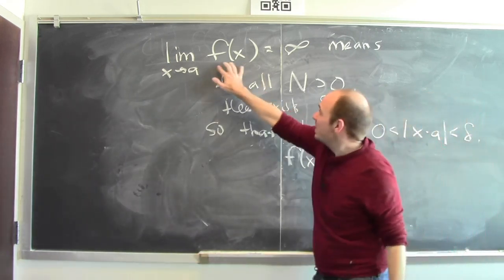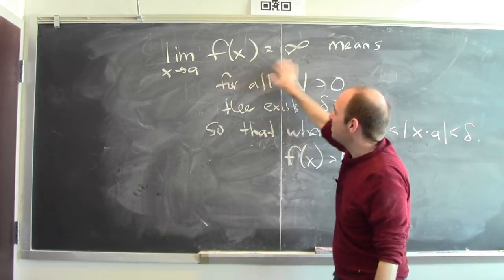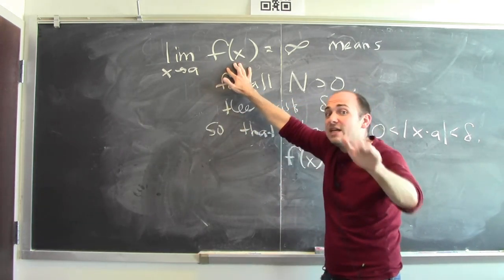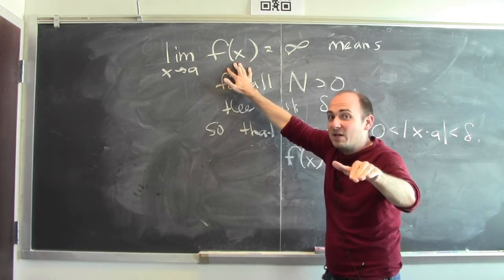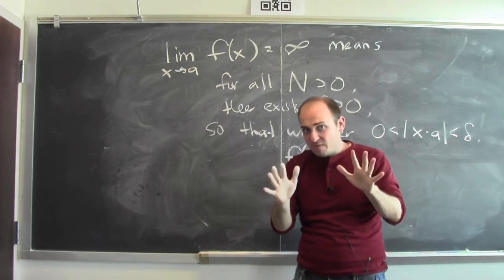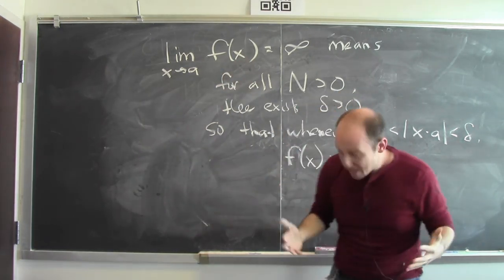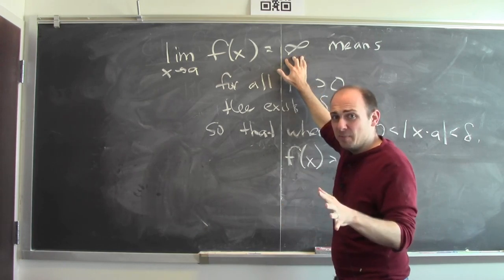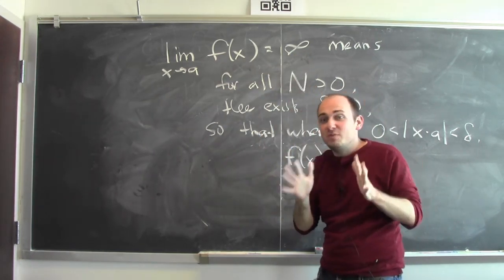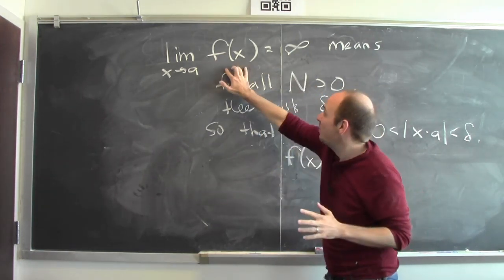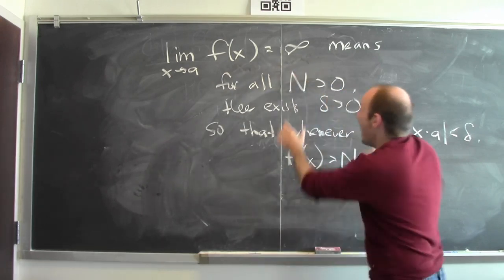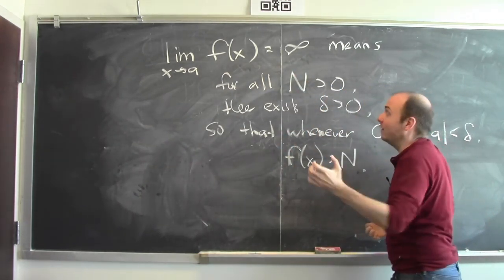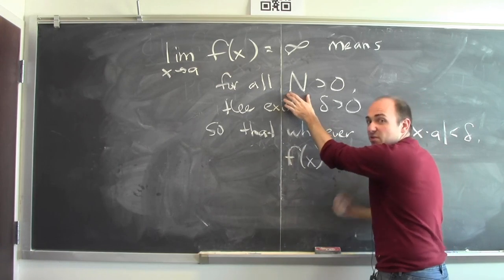To say that the limit of f(x) equals infinity as x goes to A means that I can make f(x) as big as you want. That's really different from what we've been doing before — before, I was trying to make f(x) close to some number, but to be close to infinity just means I can make f(x) as big as you demand. And N is the big number that you're demanding — you're demanding that f(x) be bigger than N.